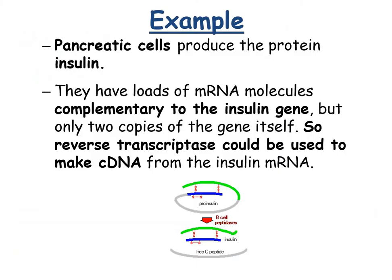As an example, pancreatic cells produce the protein insulin and they have loads of mRNA molecules complementary to the insulin gene, but only two copies of the actual gene. So reverse transcriptase could be used to make cDNA from the insulin mRNA.